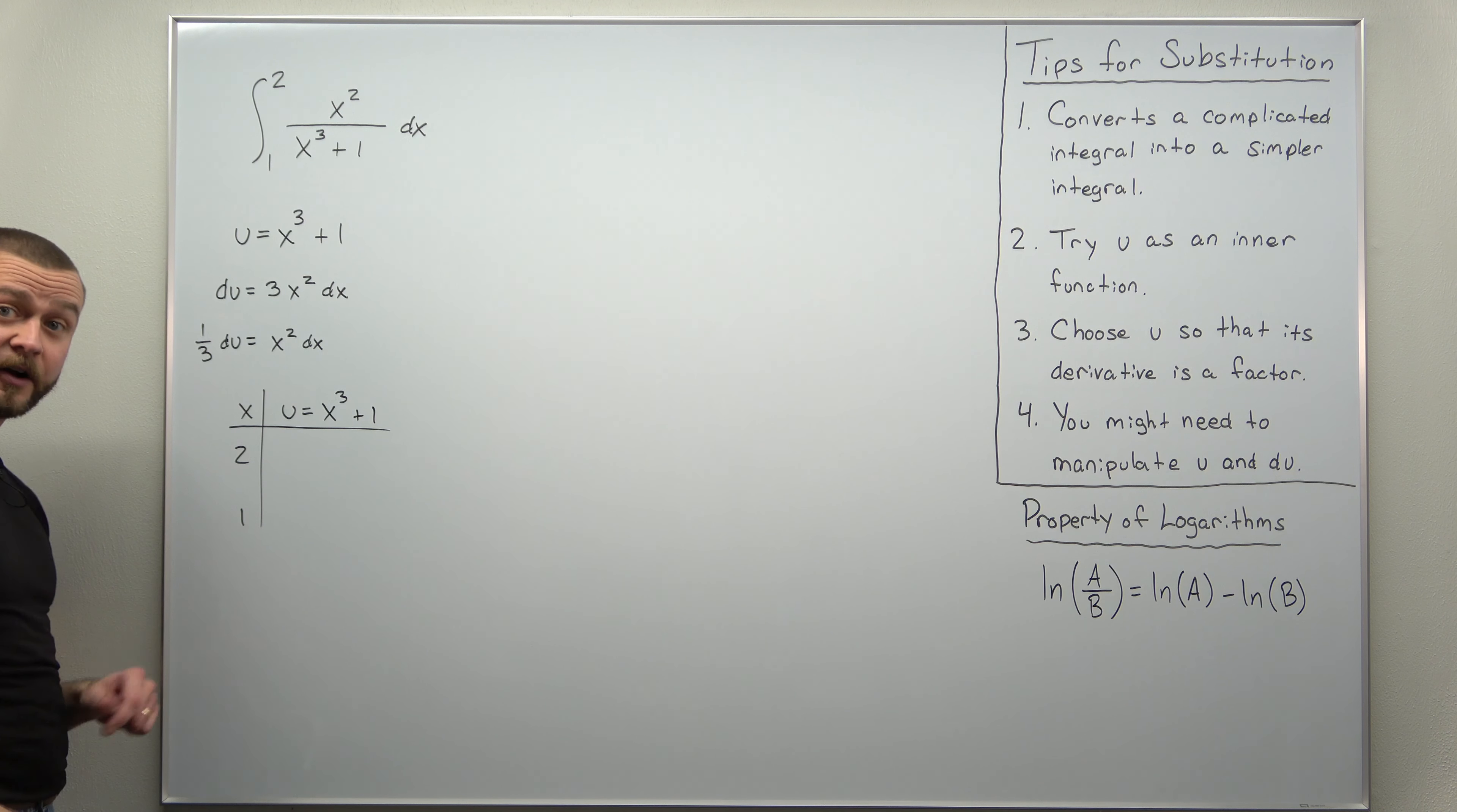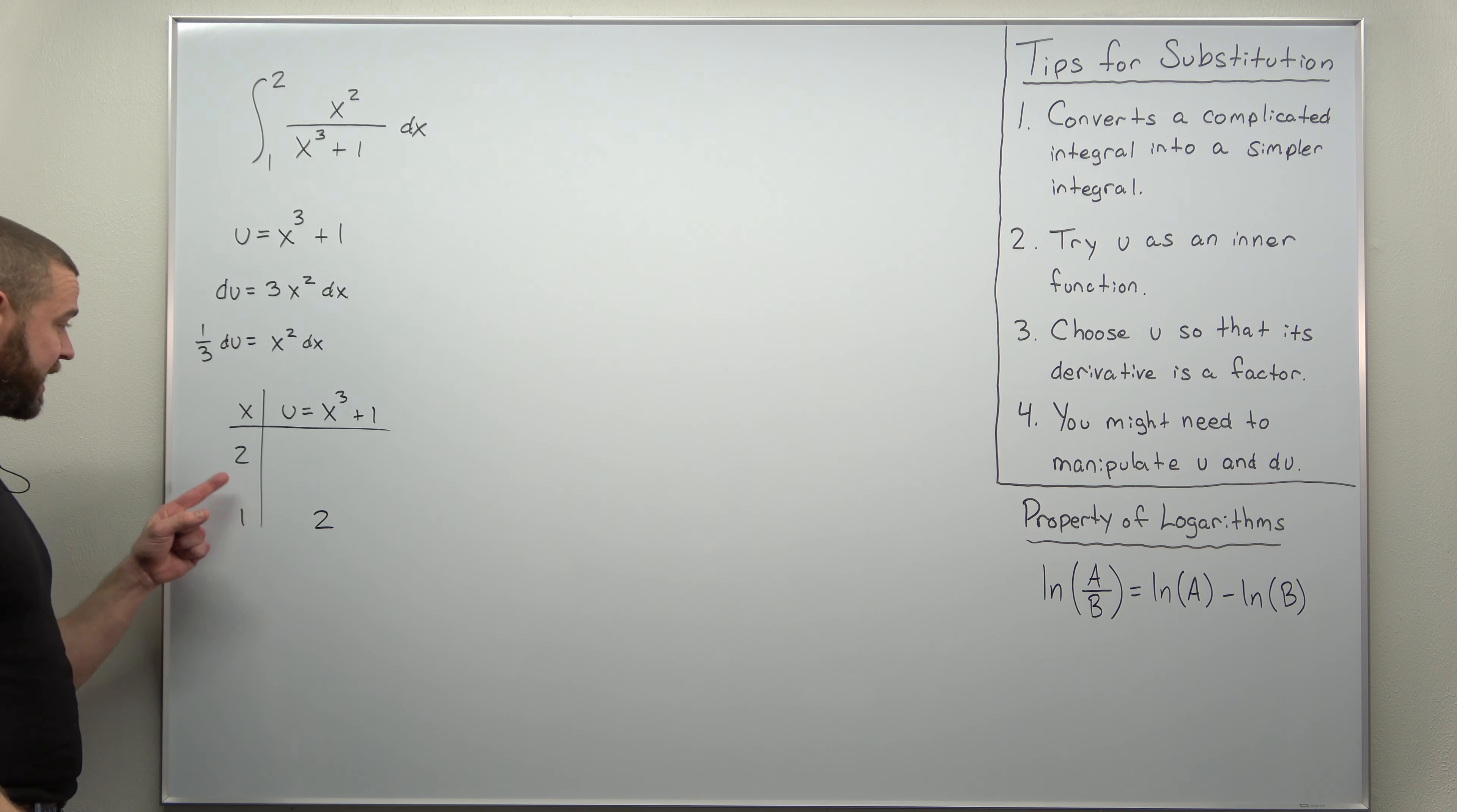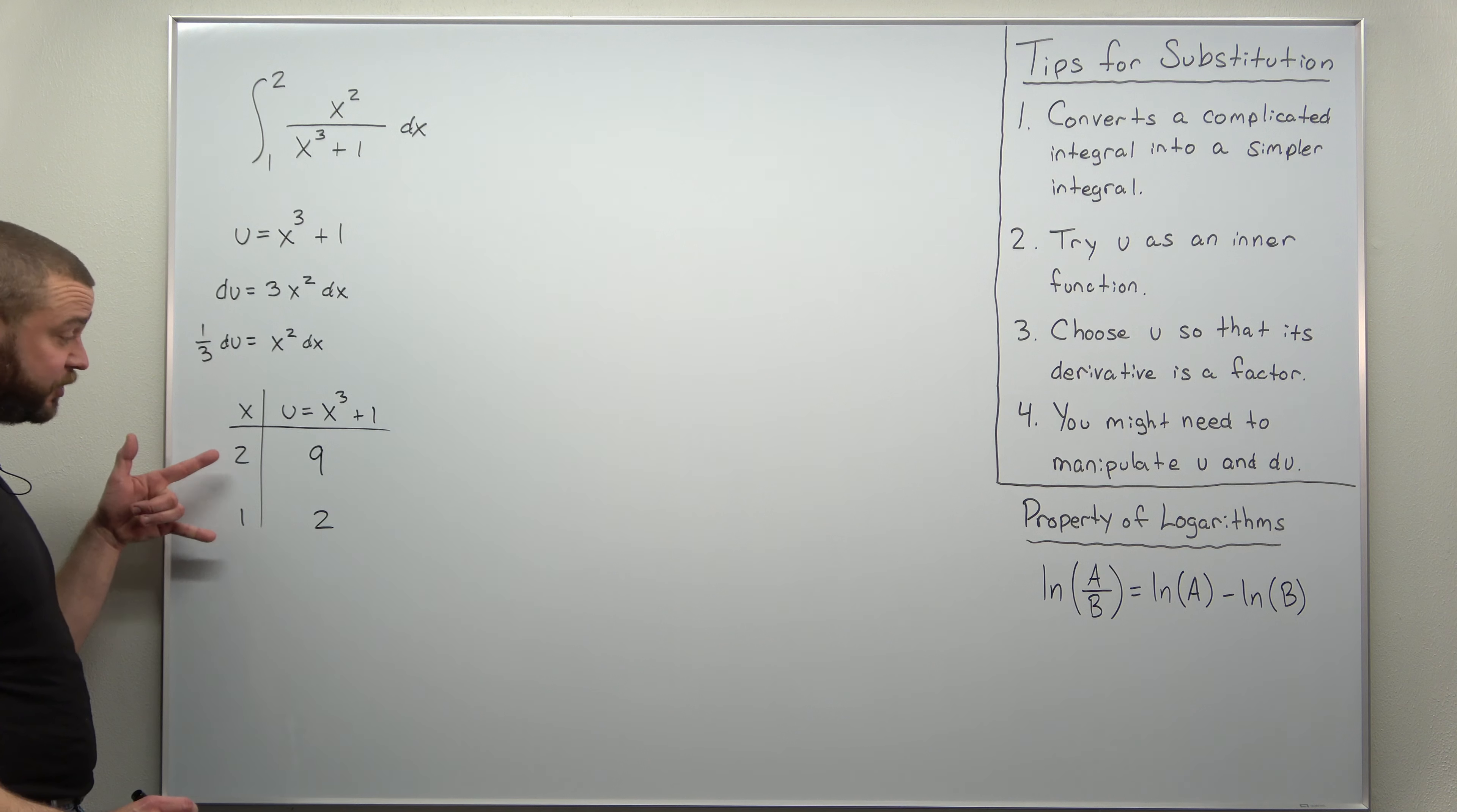1 to convert to new u limits. And we do that just by plugging in our values for x. So if we plug in x is 1 we should get here 1 cubed plus 1. That should come out to 2. And if you plug 2 in for x: 2 cubed is 8 plus 1 should give us 9. So we have x limits 1 to 2 but u limits 2 to 9.